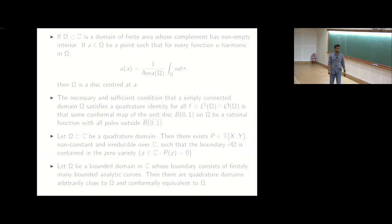The one I would like to however stress upon is a density theorem. This was first proved in 82 by Gustafson for bounded analytic curves and later by Bell for smoothly bounded domains. So the statement goes like this, if omega is a bounded domain in C with finitely many bounded smooth curves now, then there are quadrature domains arbitrarily close to it.